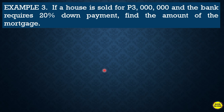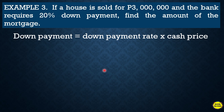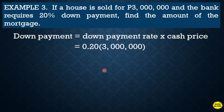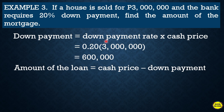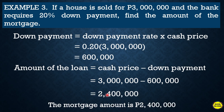For example three: a house is sold for three million and the bank requires a twenty percent down payment. Find the amount of the mortgage. The down payment = down payment rate × cash price = 20% × three million = six hundred thousand. The amount of the mortgage = cash price − down payment = three million − six hundred thousand = two million four hundred thousand. So the mortgage amount is two million four hundred thousand.